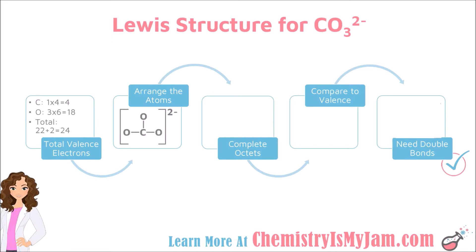Next you want to arrange the atoms with carbon in the middle, three oxygens around it, and a single bond between each one. It is also common to put ions in brackets and put the charge on the outside. Then it's time to complete the octets. Each of these atoms should have 8 electrons around it. The carbon initially had 6 electrons from the bonds, so it needs one more pair of electrons to get it up to 8. Each of the oxygens had one bond giving it 2 electrons, so it needs 3 more pairs of electrons around it.